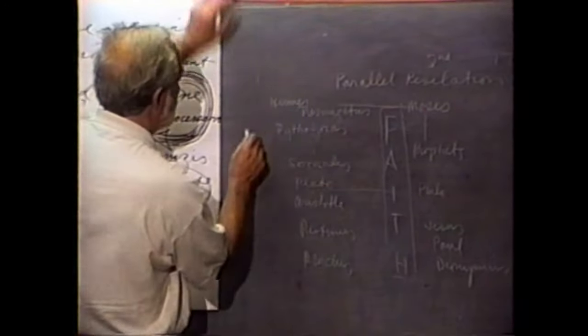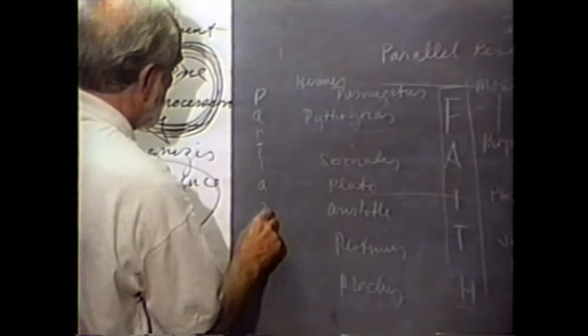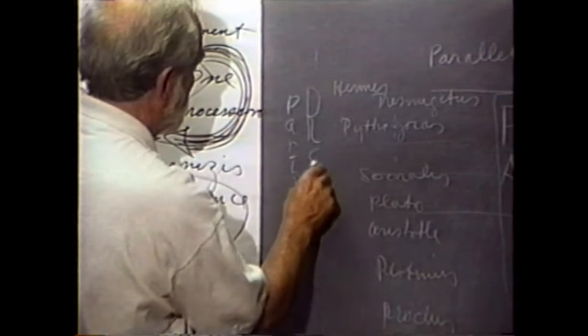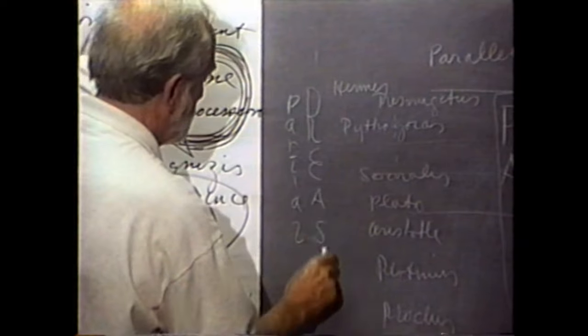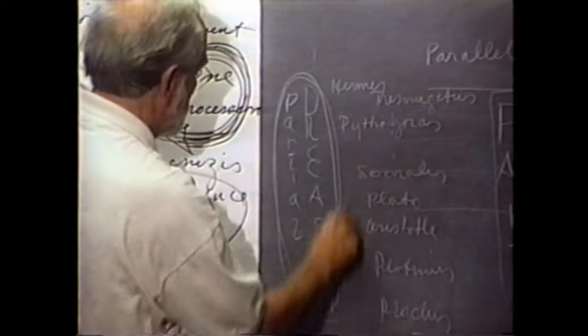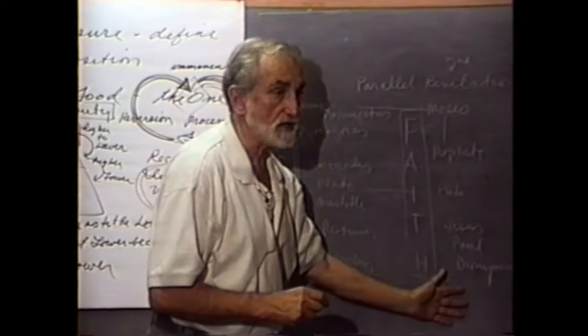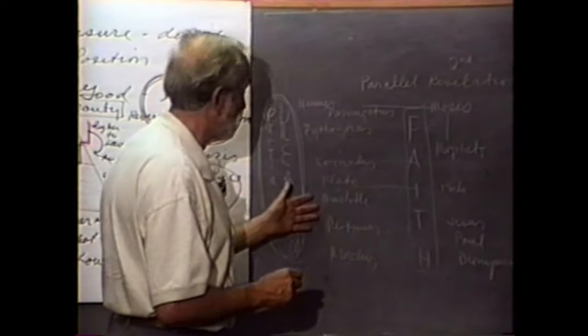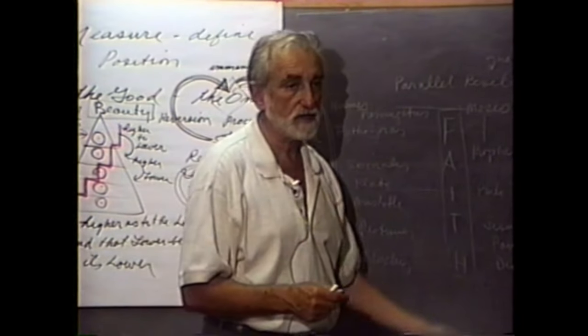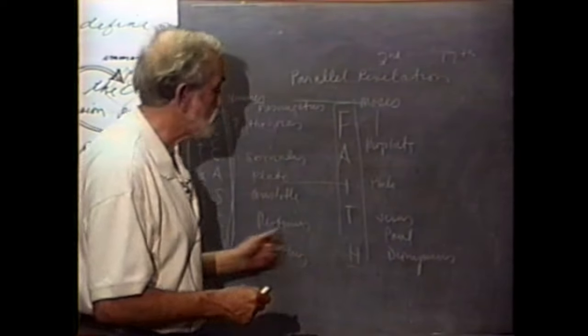This was called partial revelation because it was based upon reason. That can explain why it is and why it was that so many of the teachings on this side could be anticipated over here because it was a parallel revelation. One by reason, one by faith. Only this was argued to be far more complete. This was partial.